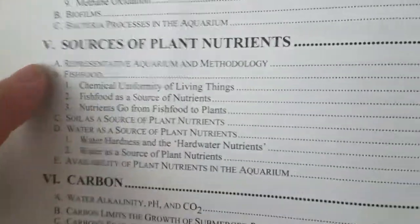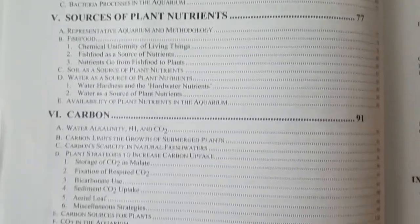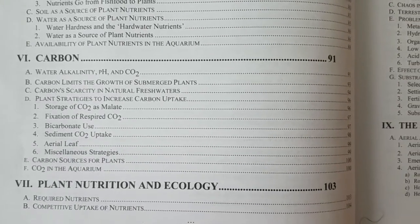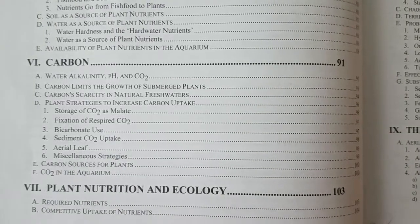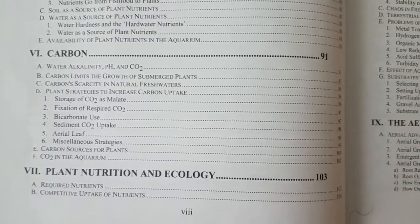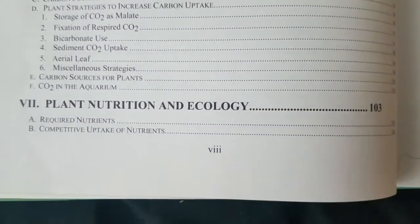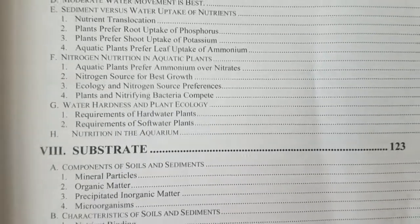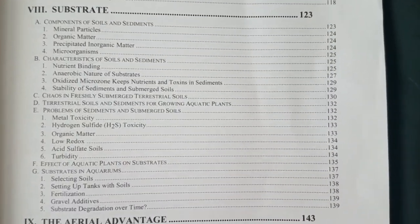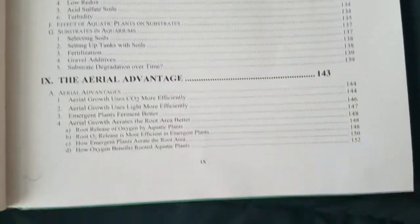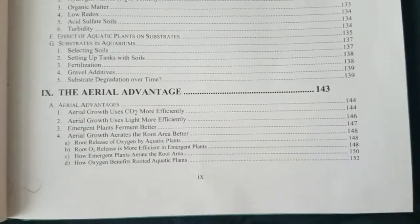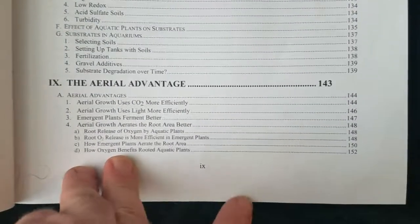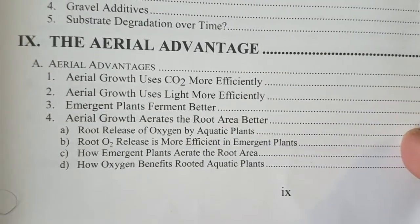Sources of plant nutrients, Chapter 5. You have carbon — it talks about the carbon cycle and CO2, which is how plants get most of their mass. It's not from the soil; plants get most of their biomass from CO2 through breathing. They get their nutrients from the soil, but what makes plant matter comes from breathing. Plant nutrition and ecology talks about required nutrients and what they do. Then a big section on substrate — very important. In my microcosm, healthy soil substrate is the most important aspect.